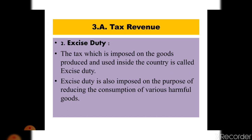Next is excise duty. The tax imposed on goods produced and used inside the country is called excise duty — that is, locally produced goods have to pay excise duty. Excise duty is also imposed to reduce the consumption of various harmful goods. In our country, excise duty is usually imposed on harmful commodities like tea, sugar, tobacco, kerosene, medicine, spirit, match, wine, and different kinds of drugs.